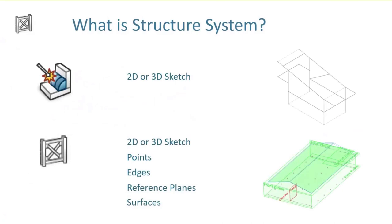In addition to that definition, there's a lot of flexibility in how we can create structural members. In traditional Weldments, we use 2D or 3D sketches — that skeleton we build all the structural members on top of. In Structure System, we can use those as well, but we can also use points, edges, reference planes, and surfaces. So we don't necessarily have to create complex 3D sketches. That circular weldment structure we saw at the beginning — we'll get into that later — it uses a very minimal amount of sketches and planes to create a pretty big system.